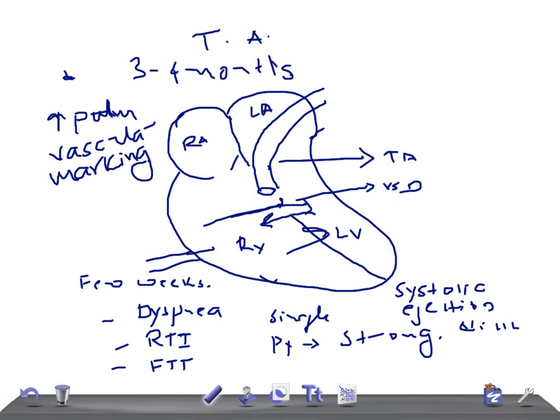VSD is surgically closed, leaving the valve on the left ventricular side. This is the VSD. The pulmonary arteries are freed from the truncus and are connected to a valve conduit that is known as Rastelli procedure, Rastelli procedure.